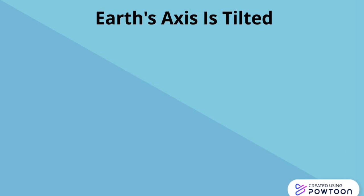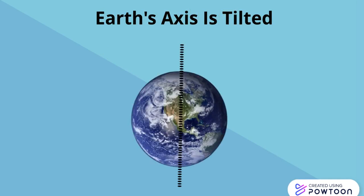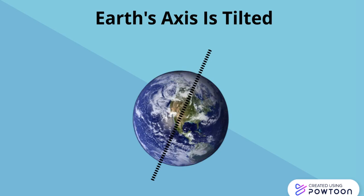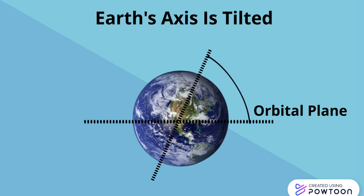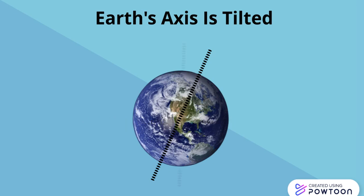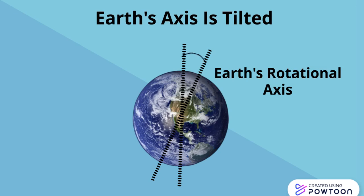Before going straight to the topic, I would like to tell you two facts. The first one being that the earth's axis is tilted. Now if you want to find how much it is tilted, there are two ways. The first way is to use the earth's orbital plane as the base, then you get the inclination as 66.5 degrees. The other way is to use the earth's rotational axis as the base, then you get the inclination as 23.5 degrees.